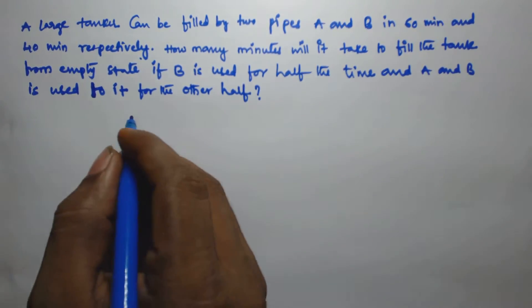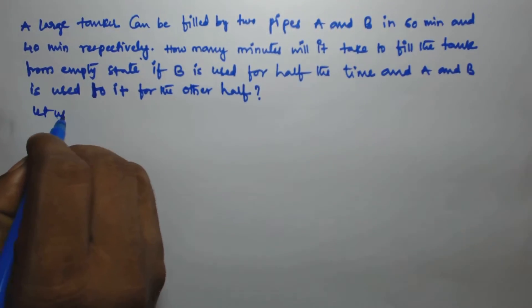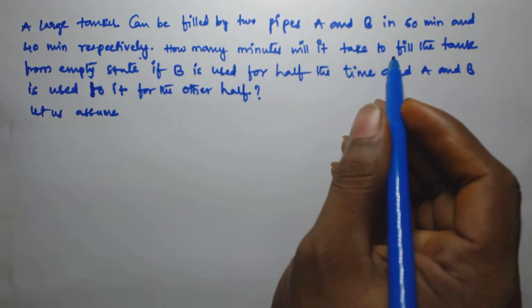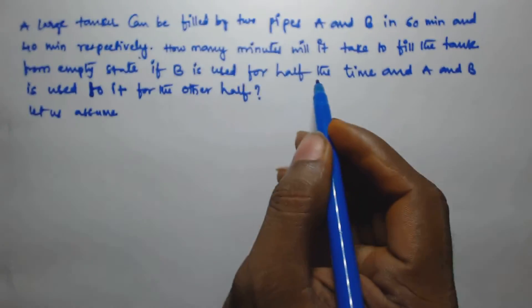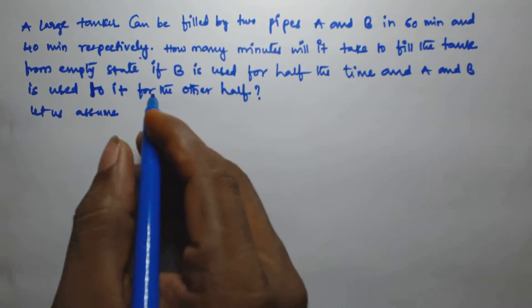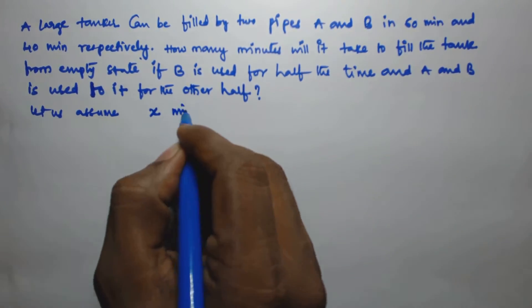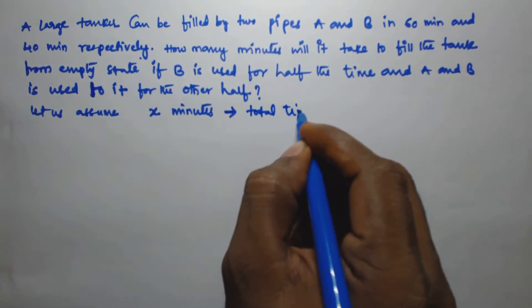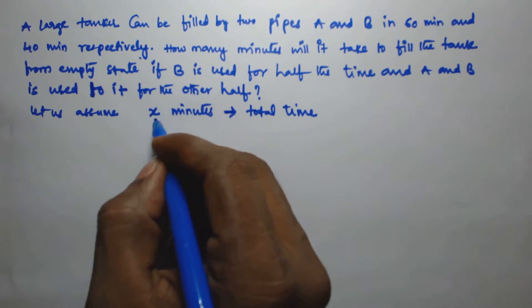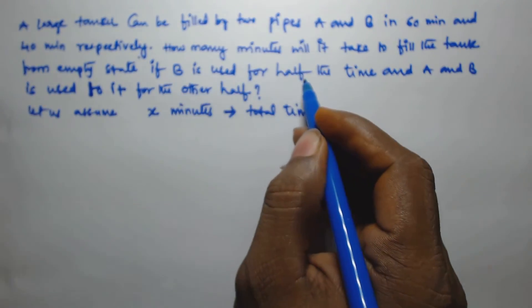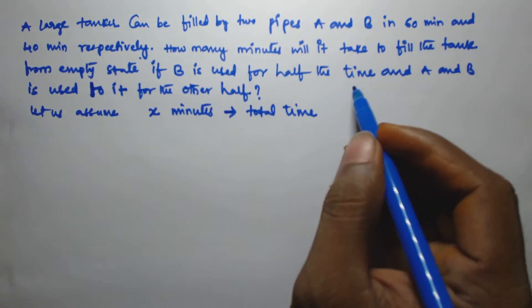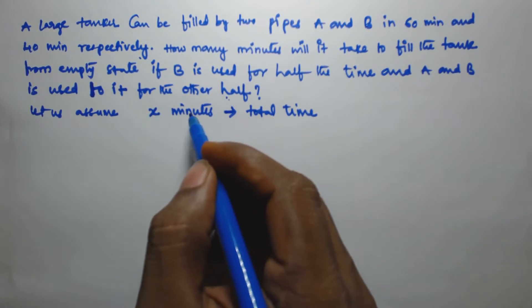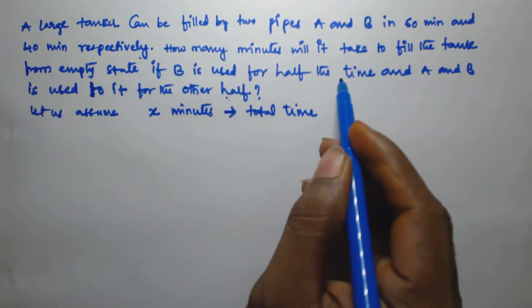To solve this, let us assume the total time to fill the tank from the empty state is x minutes. In this total time, x/2 minutes are used by B alone to fill the first half of the tank, and x/2 minutes are used by A and B together to fill the other half.